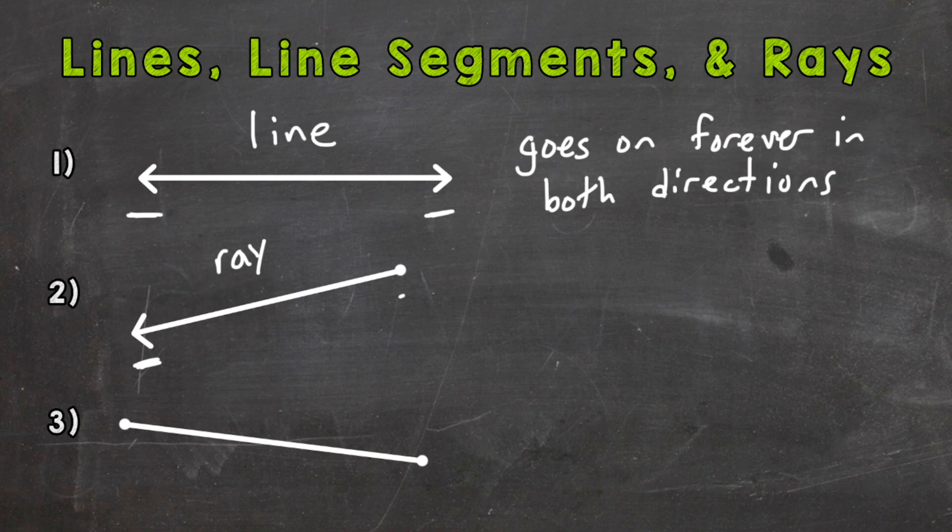This dot or point here signifies that it's an ending point. So a ray has a starting point and then goes on forever in the other direction. I'll put defined